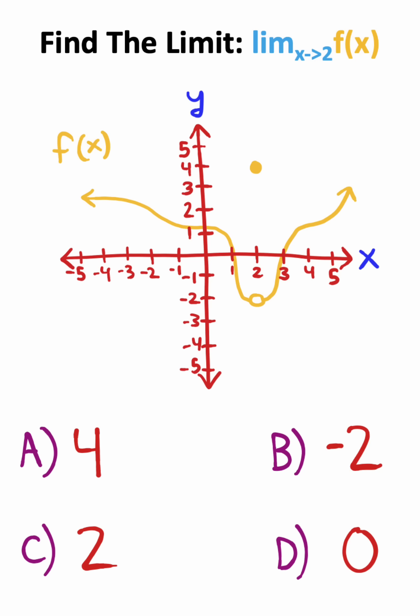Now we'll start with the first question here, which asks us to find the limit of our function as x approaches 2. Now if I approach 2 from the left, notice we end up at negative 2. If I approach 2 from the right, we also end up at negative 2. The hole doesn't matter when it comes to limits, so our solution is negative 2.